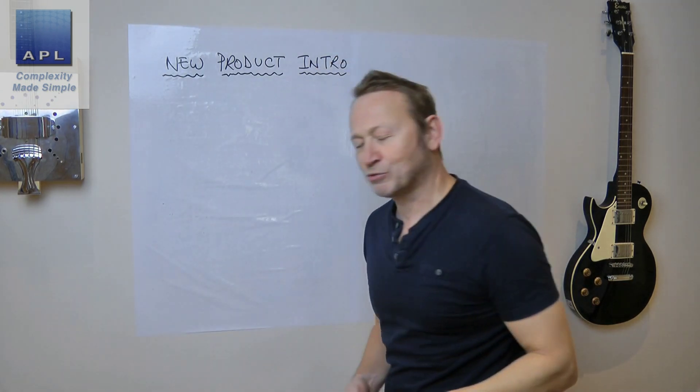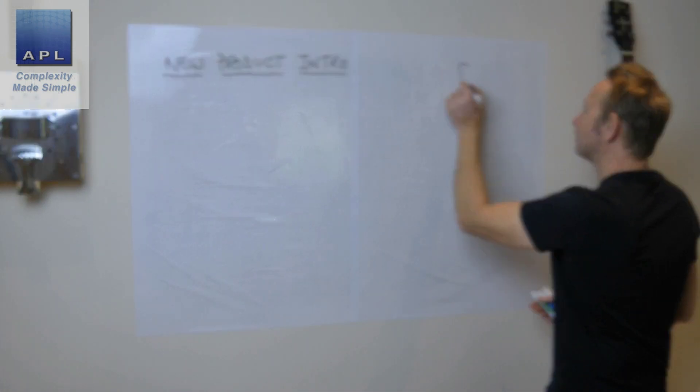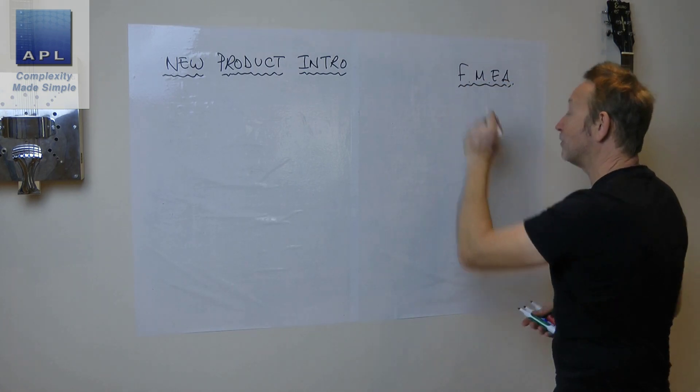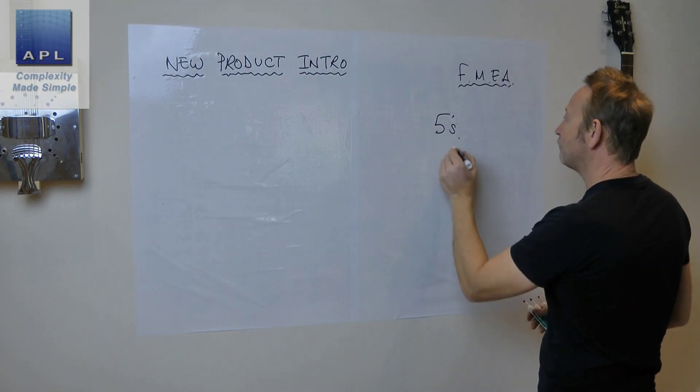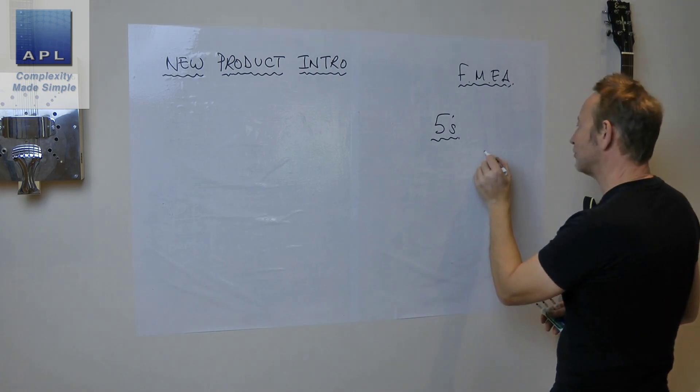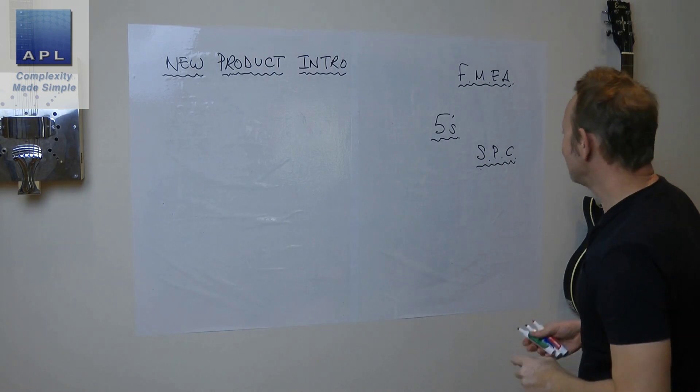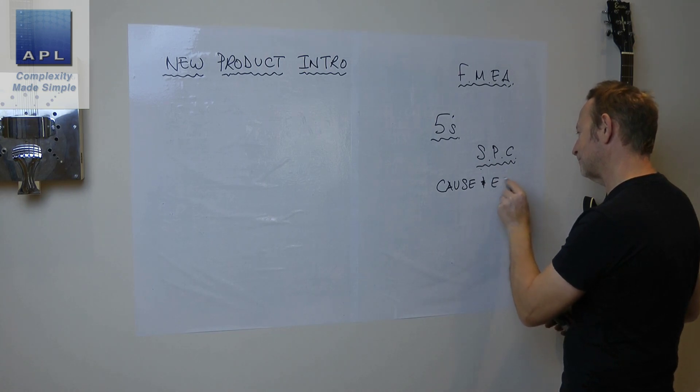Before I got trained as a Six Sigma black belt, I'd learned various tools in my career. I'd been on an FMEA course, never used it. I'd learned about 5S, didn't really use it. I'd learned about SPC, didn't really use it. Cause and effect fishbone diagrams, didn't really use them.